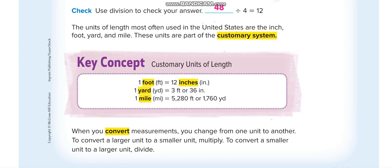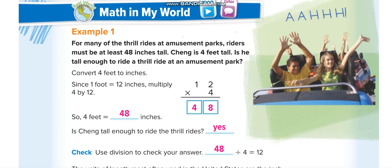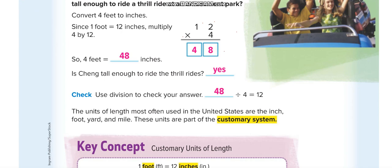The first example: for thrill rides at an amusement park, riders must be at least 48 inches tall. Chang is four feet tall — is he tall enough? We need to convert four feet into inches. One foot equals 12 inches, so four feet is four times 12, which is 48 inches. Yes, he is tall enough.